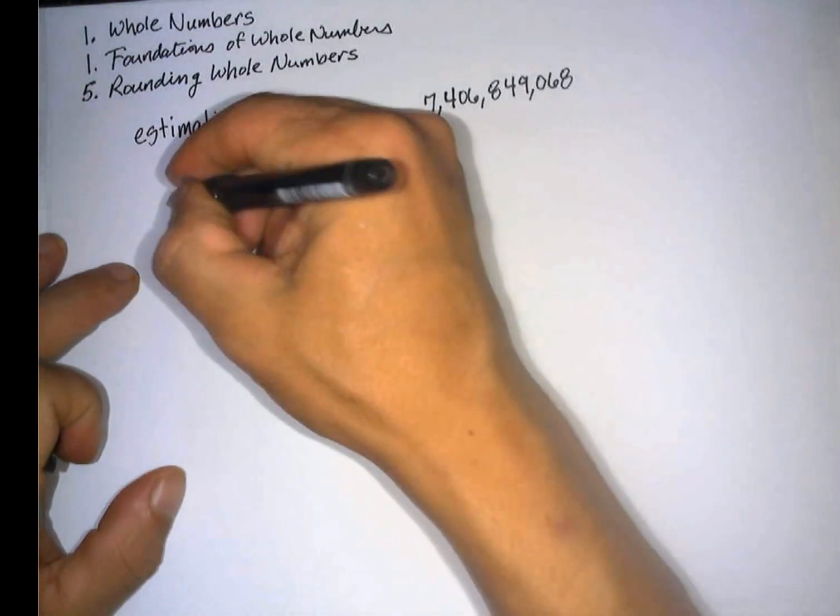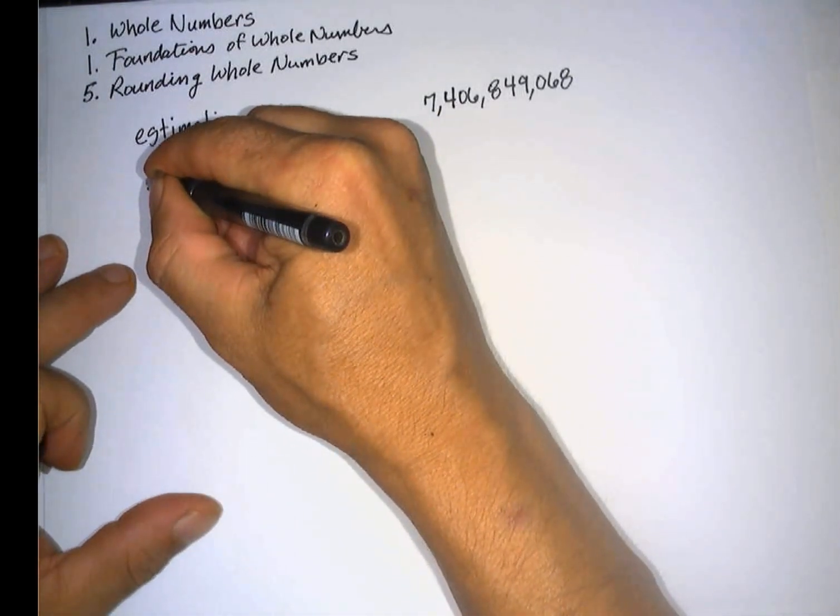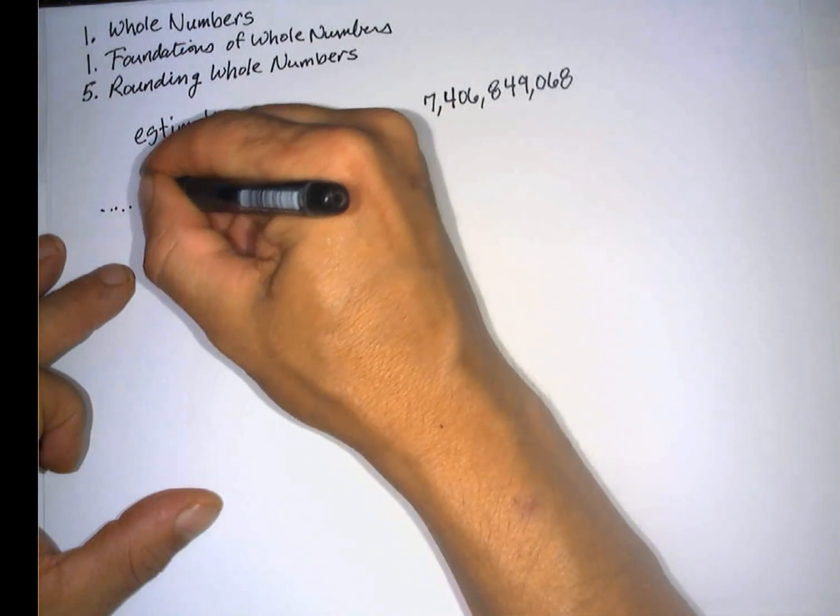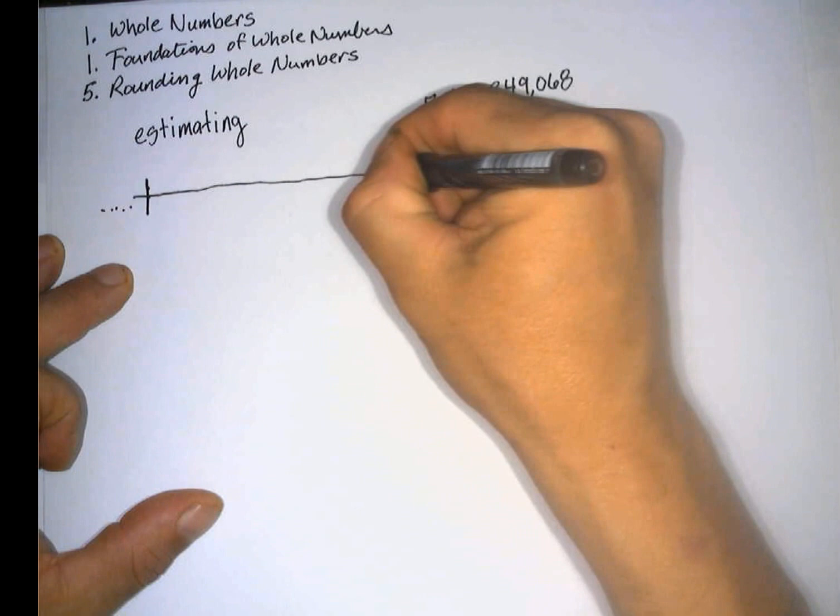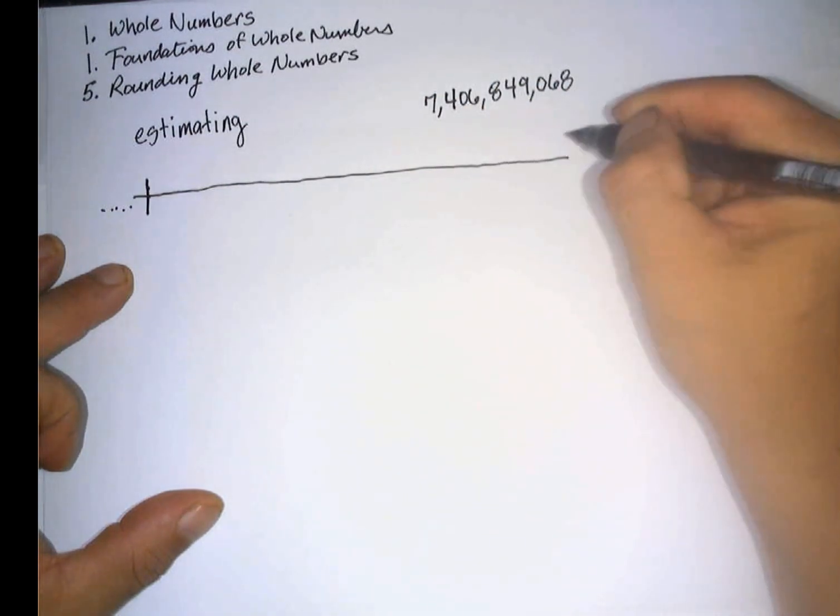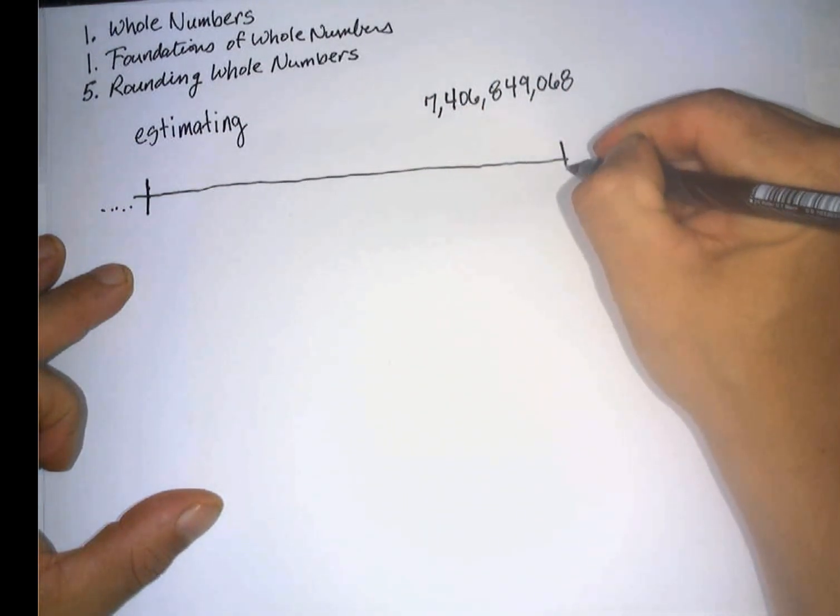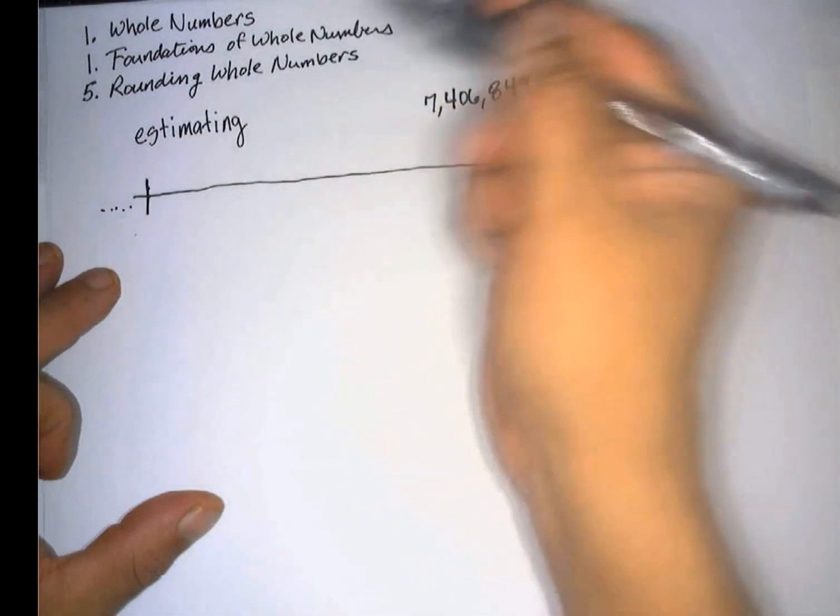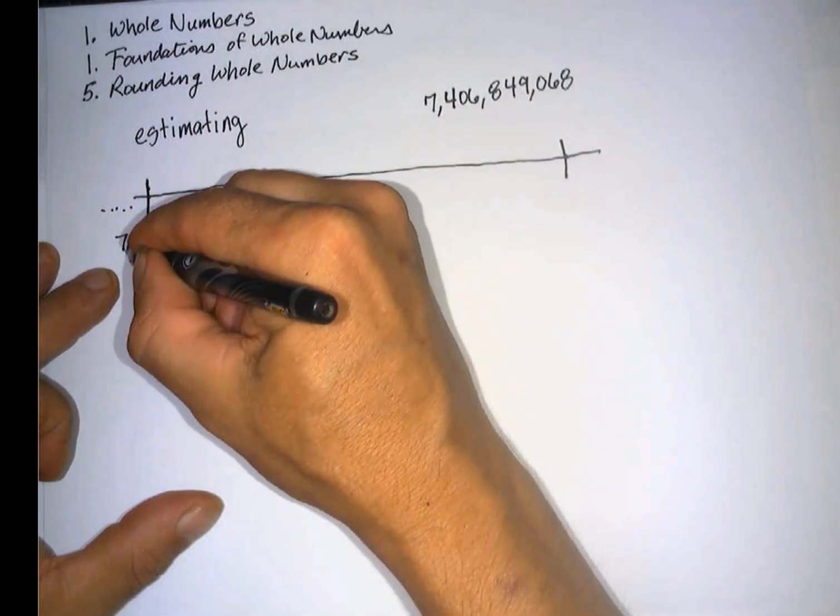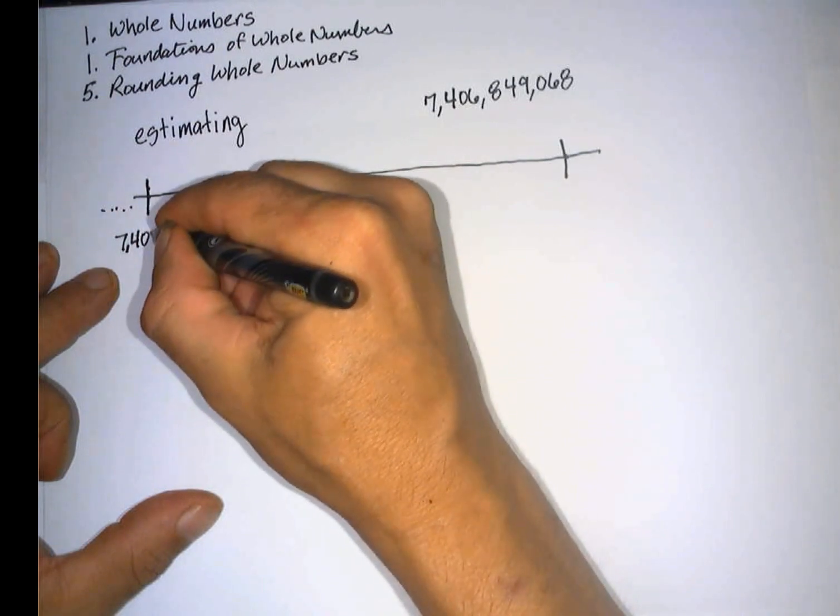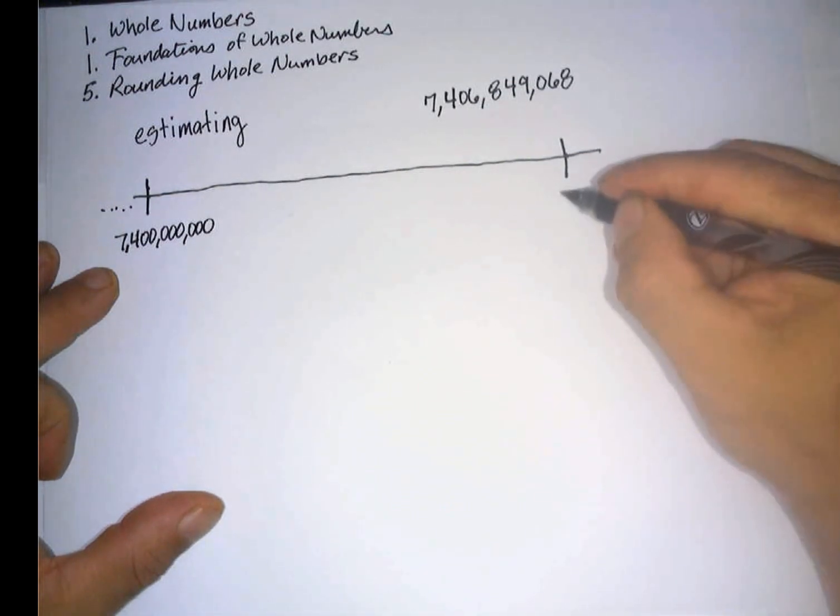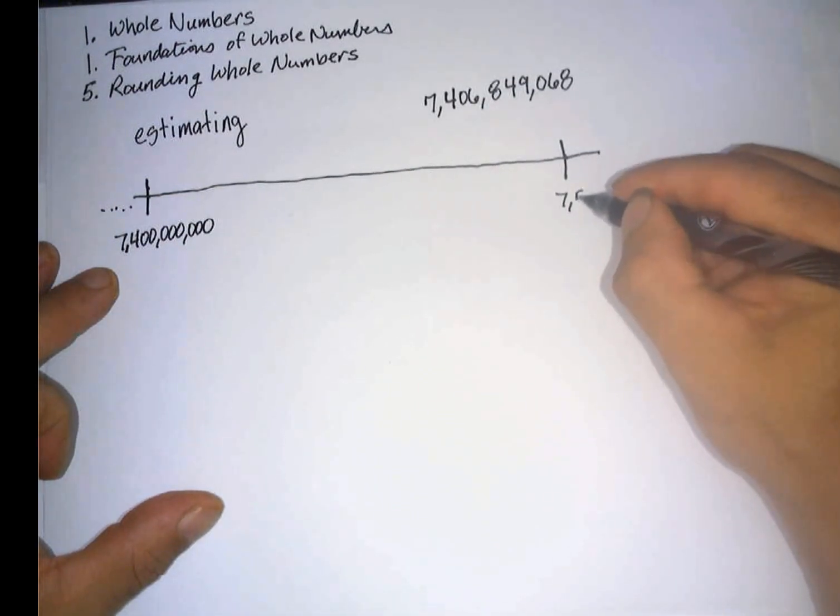So let's take a look at what we're doing when we round visually. Let's say this is way out on the number line. And let's just say we're going to round to the nearest hundred million. Okay, so that means that this would be 7,400,000,000, and this would be 7,500,000,000.